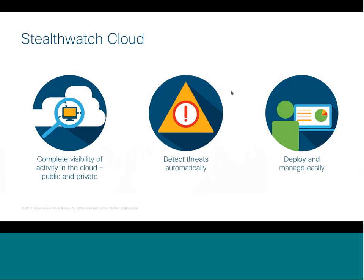Stealthwatch Cloud is Cisco's newest software-as-a-service security offering that gives you complete visibility of activity both in the public and private cloud. We do this using something called dynamic entity modeling, which I'm going to dig a bit deeper into shortly. We are able to detect threats automatically on the environment without any need for you to do any of the heavy lifting or deploying anything yourself. It's a software-as-a-service solution that you manage purely from the cloud and reap the benefits from the cloud as well.